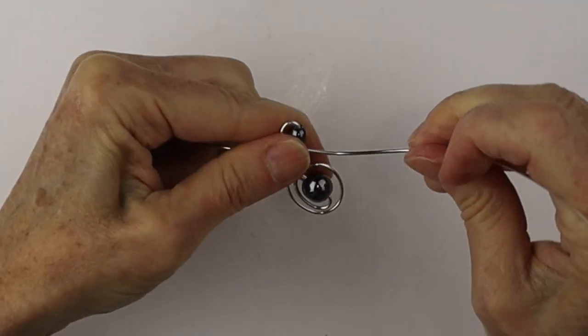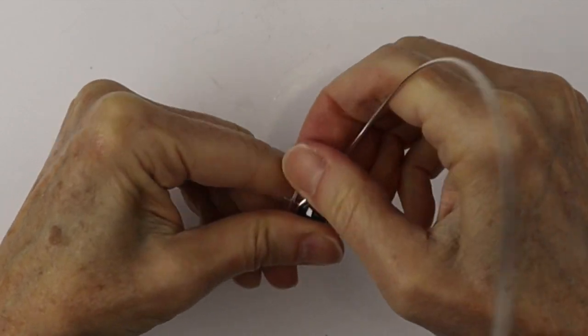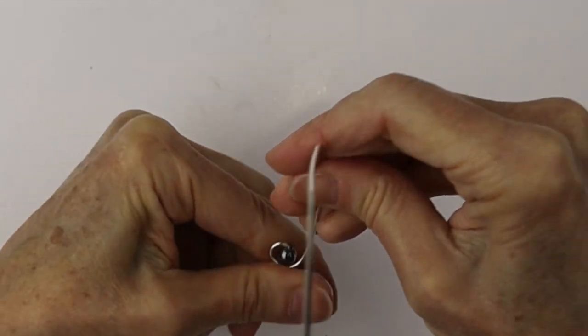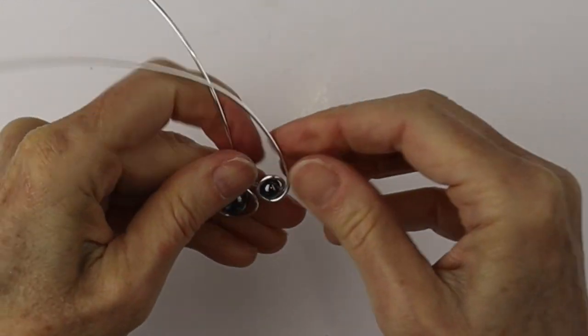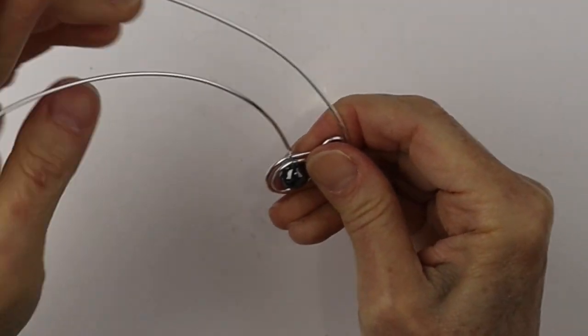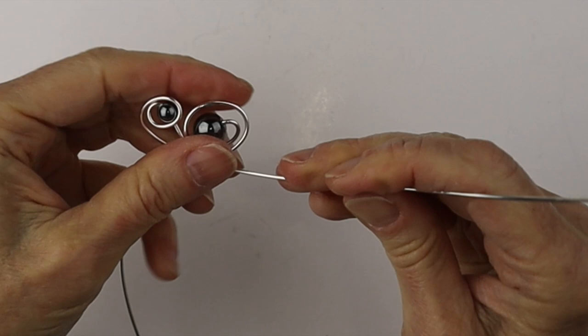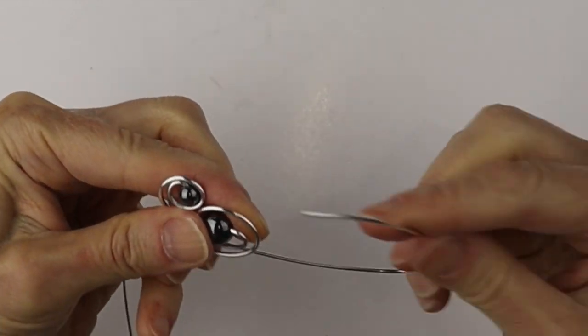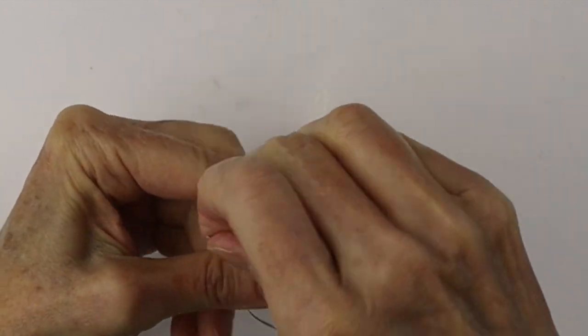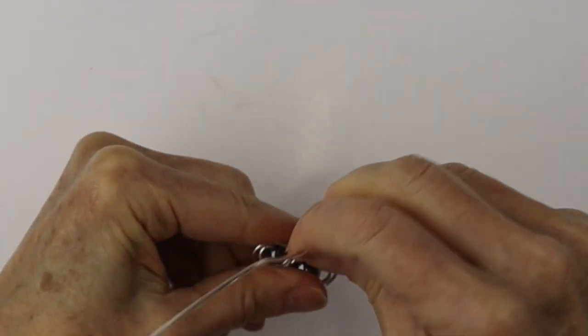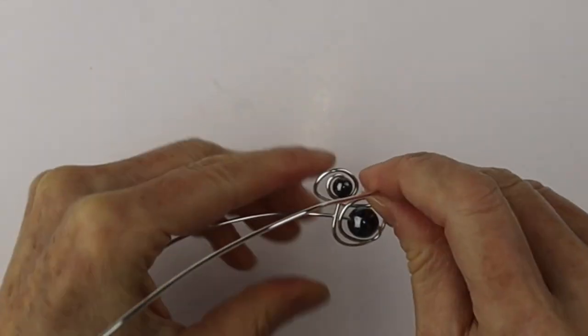I do have other bracelet tutorials where the whole bracelet is done in this style with the kind of swirls. One of the very first wire jewelry projects I made in the 90s was very similar to this where I just took wire and wound it around and formed a whole band of a bracelet in this style.